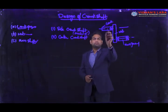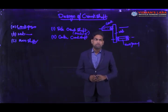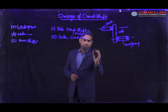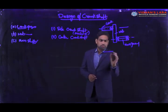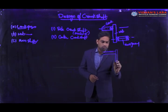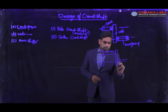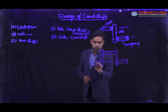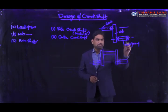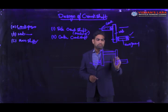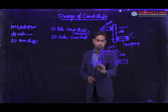Side crankshafts or overhang crankshafts are used for single-cylinder engines or light-capacity engines. For heavier-capacity engines we use the center-type crankshaft, where the crank is supported by two main journals — one on each side of the crank, with two webs flanking the crank pin.